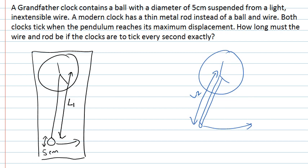But what we need to ask is can we approximate this case as a simple pendulum? And in this problem we're told that the diameter of the ball is 5cm and it's suspended from a light, inextensible wire. So what this tells us is that although this wire isn't massless, the fact that it's light means that we can approximate it as massless.